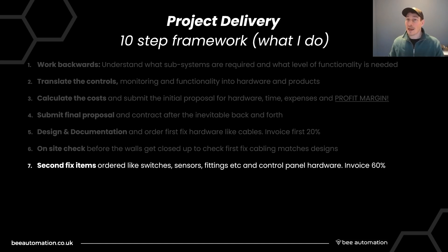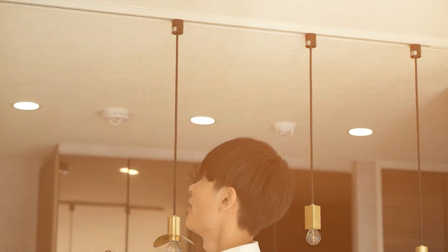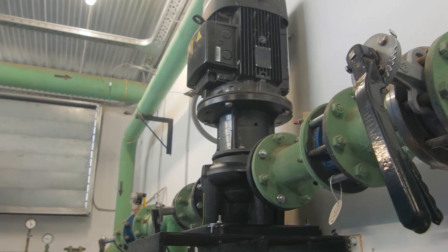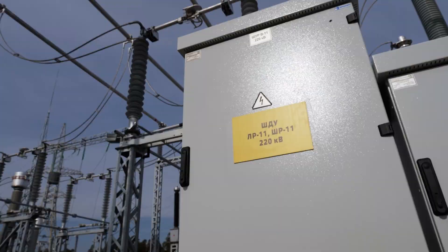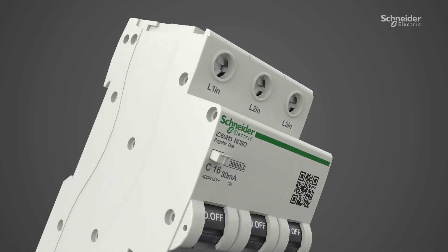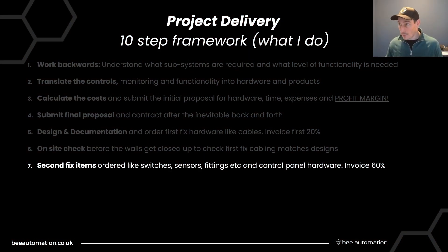Step seven is ordering all second-fix items and panel hardware: field devices like light fittings, switches, motion sensors, valve actuators, CO2 monitors, as well as panel enclosures, PLC modules, terminal blocks, cable, RCBOs, and so on. This is a hefty part of the project cost, so at this point I invoice around 60%.